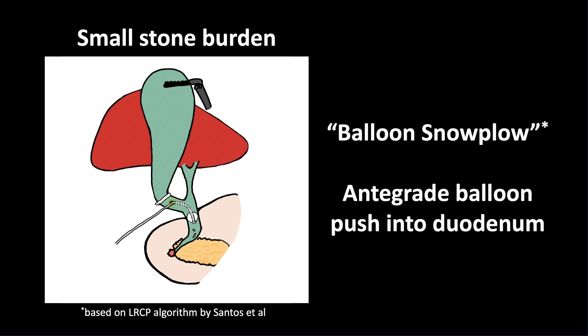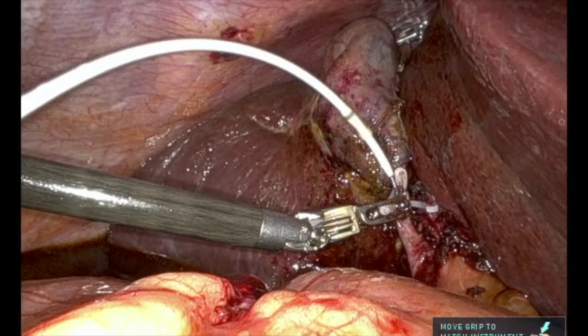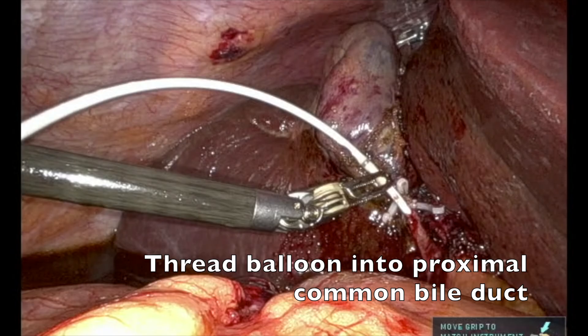For a small stone burden, start with an antigrade balloon snowplow. This entails blowing up a balloon in the common bile duct and pushing stones and sludge forward into the duodenum under fluoroscopy. There are a variety of balloons for this. We prefer the Extractor Pro RX that injects contrast above. To use this balloon, first insert the wire into the duodenum, and then thread the balloon over the wire into the common bile duct.